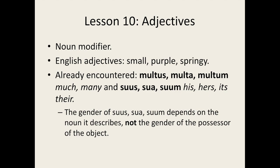Note that suus is what we call a possessive adjective. It denotes the possession or belonging of a noun. For example, in English we may have phrases such as 'his coat' or 'her shoes.' It's also important to note that where we use suus, sua, or suum depends on the gender of the noun which is being described, and not the gender of the person who possesses that noun or object.